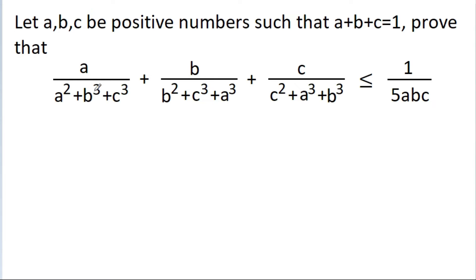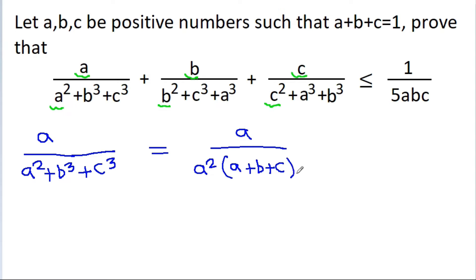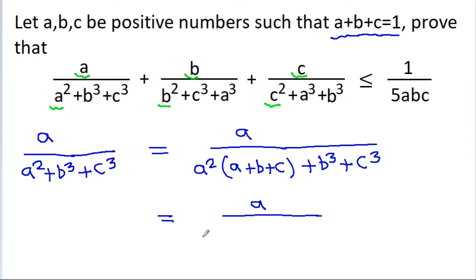The first thing that we can notice is here we have a and a squared, and here b and b squared, and here c and c squared. All three terms have a particular pattern. So if we start with the first term a/(a² + b³ + c³), then to make a² into a³ we can write this as a/(a²·(a + b + c) + b³ + c³), because a + b + c = 1. This gives a/(a³ + a²b + a²c + b³ + c³).